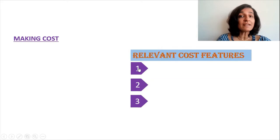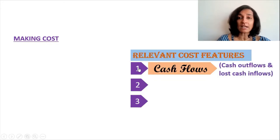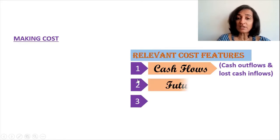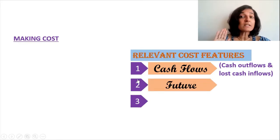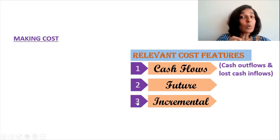Now, the items included in the making cost are based on the relevant costing principles. So what are the three basic features of relevant cost? First, there should be cash flows — either a cash outflow or a lost cash inflow. The second feature is it should be related to the future; it should not be a past or sunk cost. And the third feature is it should be incremental — that is, when we are taking a decision, the cost should increase. Only then can we treat it as a relevant cost.